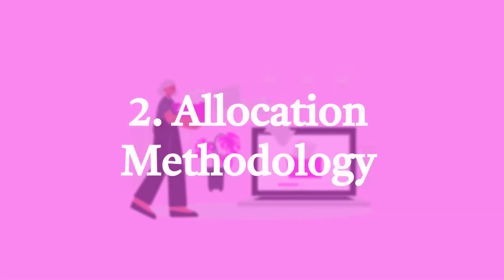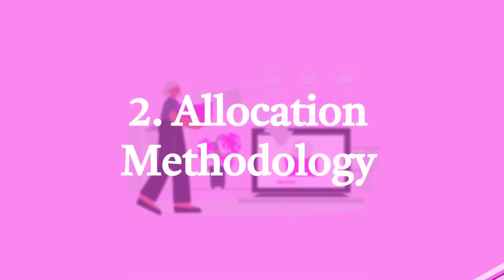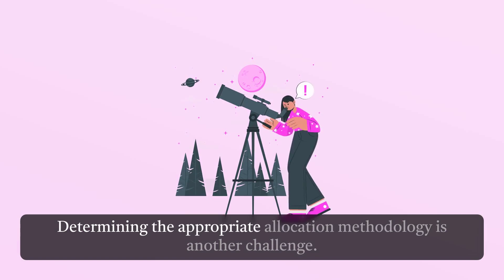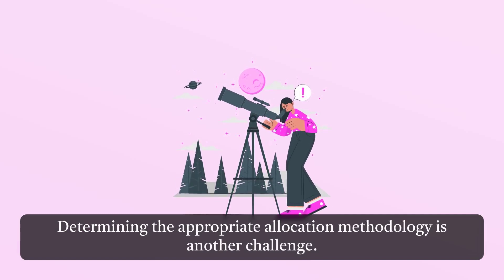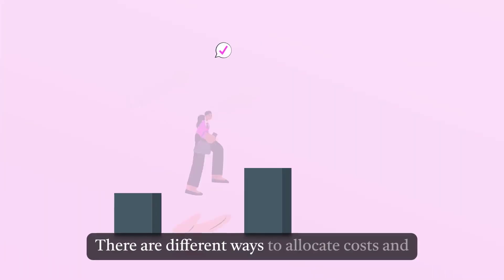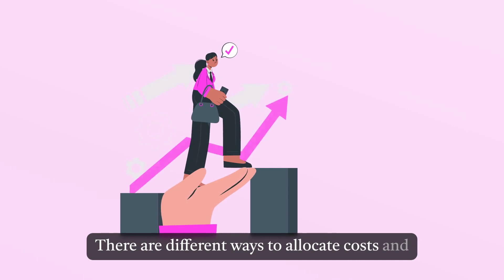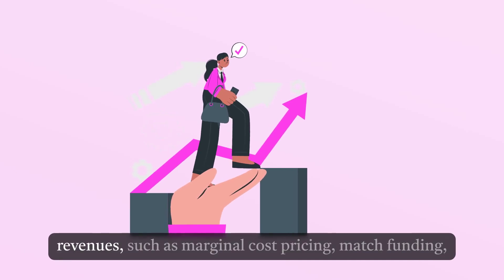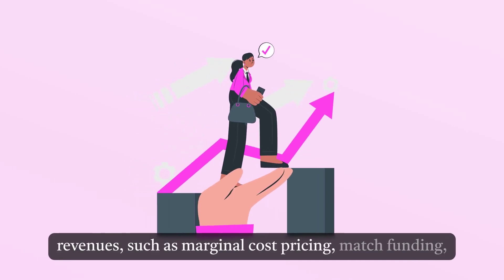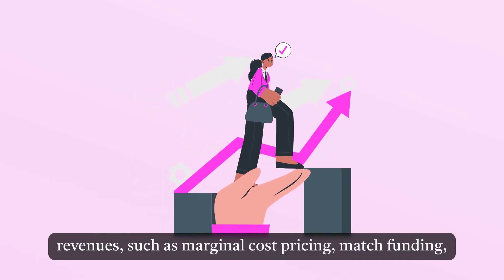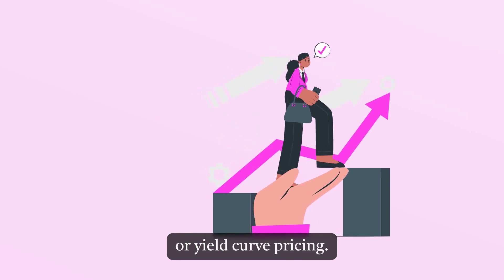Challenge 2: Allocation Methodology. Determining the appropriate allocation methodology is another challenge. There are different ways to allocate costs and revenues, such as marginal cost pricing, match funding, or yield curve pricing.